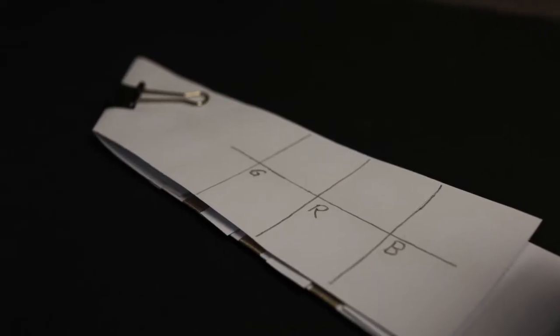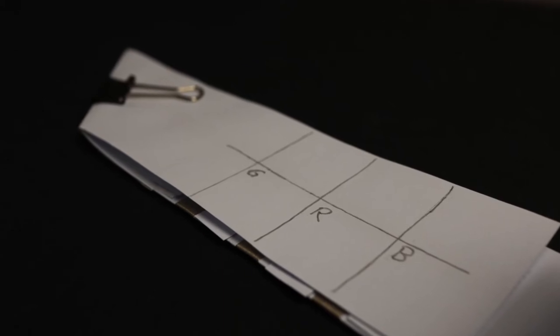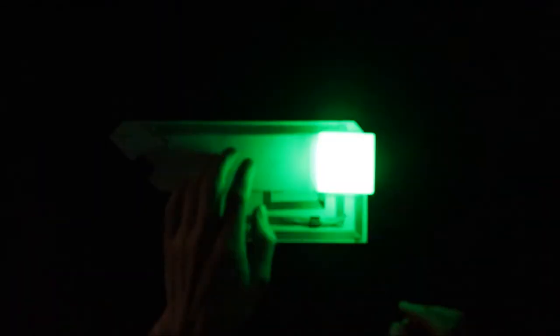If you want, you can mark your pressure points and the according colors on the top sheet. When everything works, you should be able to light up the LED in all sorts of colors by pressing down one, two, or three points of the switch.